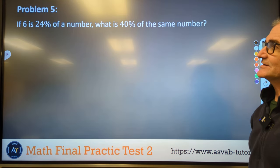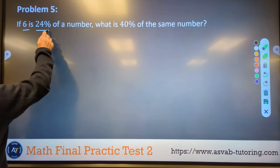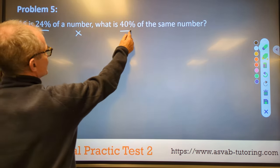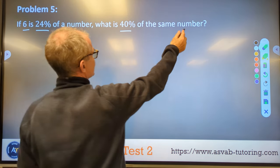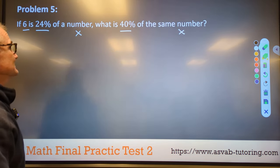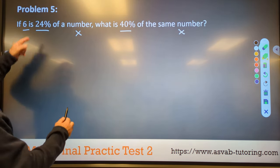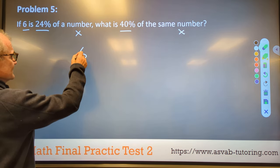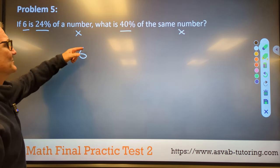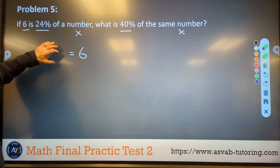Problem number five, six is 24% of a number. I don't know what that number is. I'm calling that number x. What is 40% of that same number? So I got to figure out what x is and then find 40% of x. If six is, is is equal sign. So I know something is going to be equal to six. 24% of a number. So what I'm saying is 24% of a number is six.